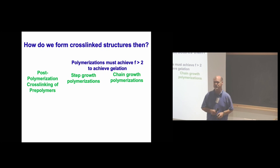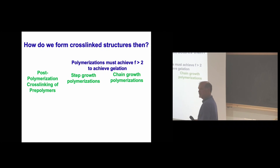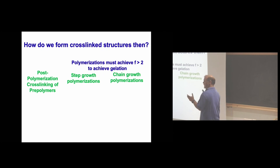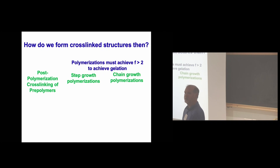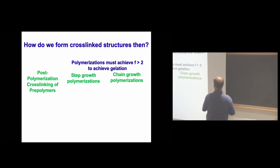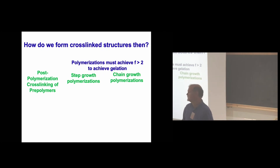How do we form crosslink structures? Give me one example of a polymerization that forms one. Epoxy — you go to the hardware store, buy your epoxy, and it's often a two-component system: an epoxy and an amine. Basically, each amine can react with two epoxies, and the epoxy typically has at least two functional groups on it. So we're at functionality greater than two. Is that epoxy-amine an example of step-growth or chain-growth polymerization? Step-growth — correct.